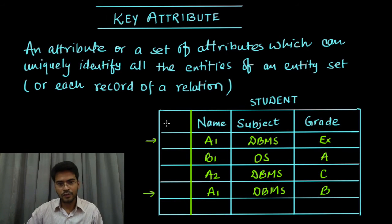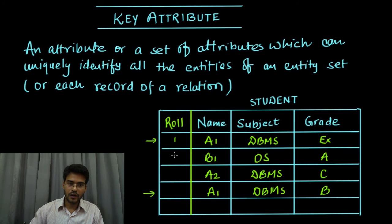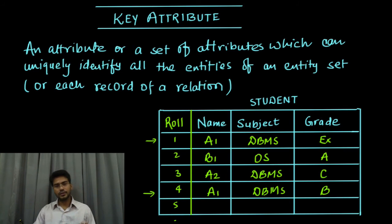In case of student, we will have roll number and that will store the information, something like 1, 2, 3, 4, 5 and so on. This roll number will not be common to two or more students, it will be unique throughout obviously. This will act as a key for our student database.